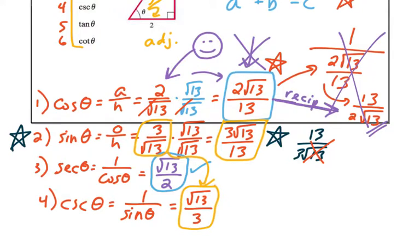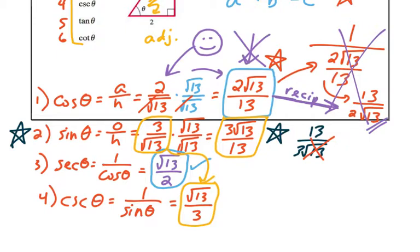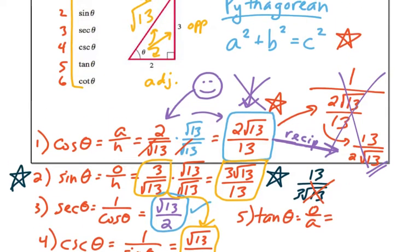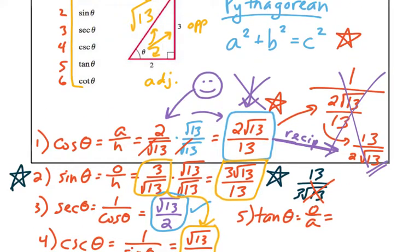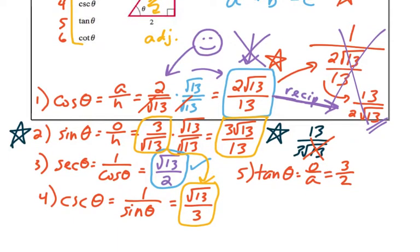Number five. We're doing the tan and then the cotan for number six. Tangent of theta. Remember tangent is SOH-CAH-TOA. TOA. So opposite over adjacent. Let me go back up to my triangle here, friends. Opposite was three. Adjacent according to theta is two. Oh, no radicals. No rationalizing. Do I have to reduce that fraction? No, not really. Wow. That was easy. Sweet. Tangent is done.